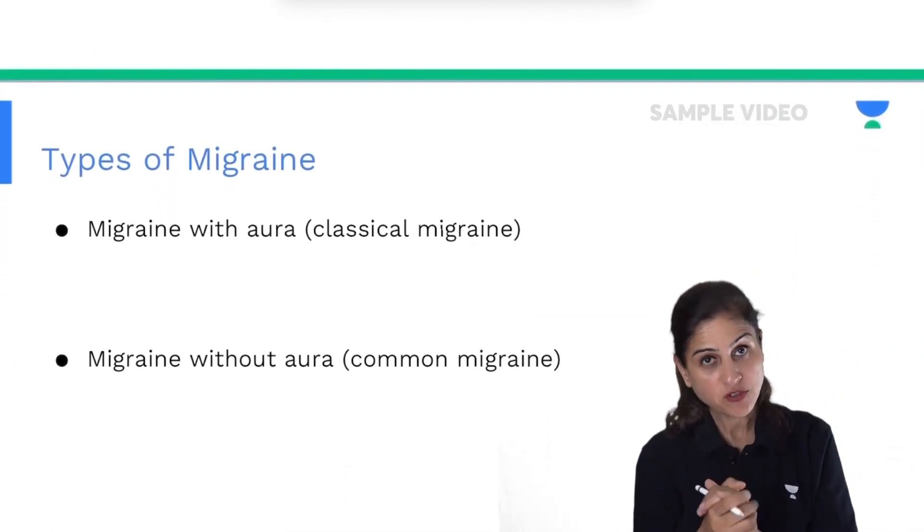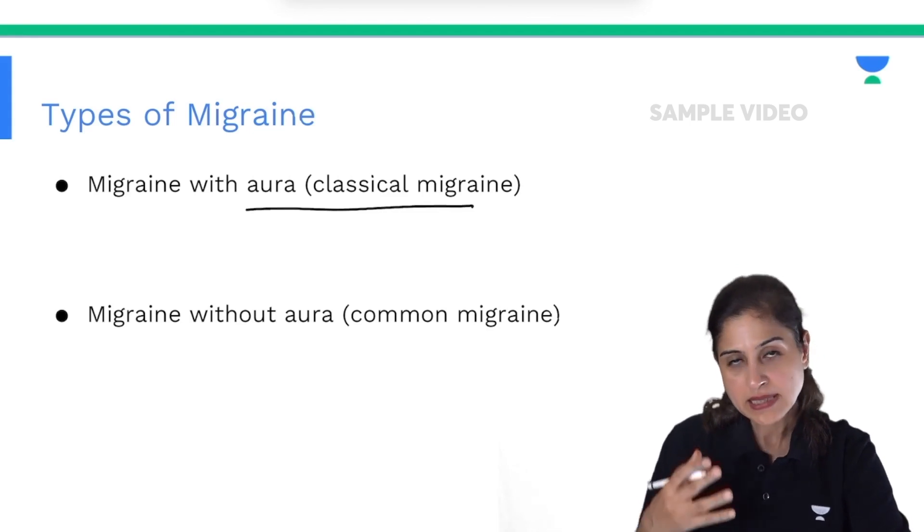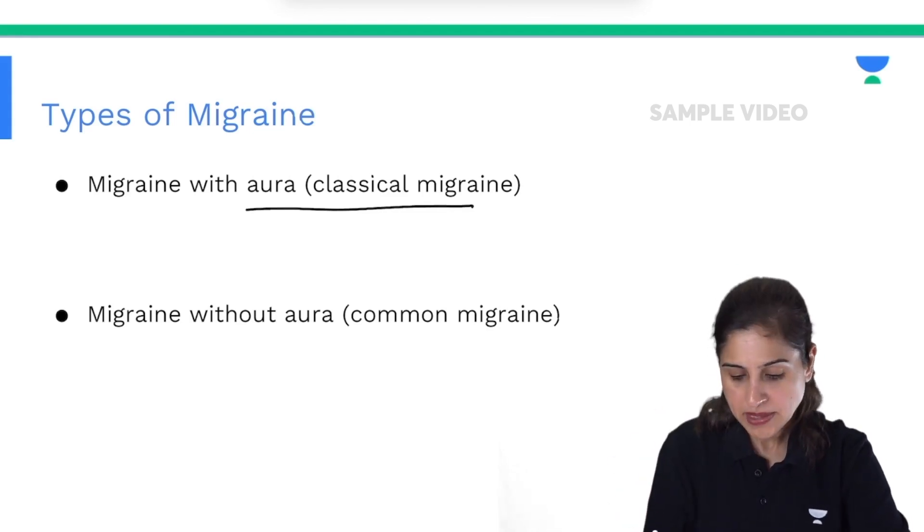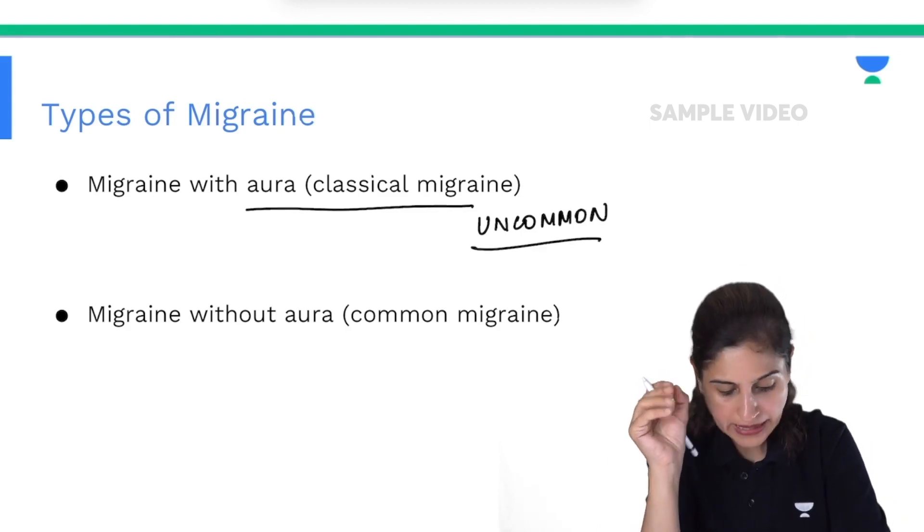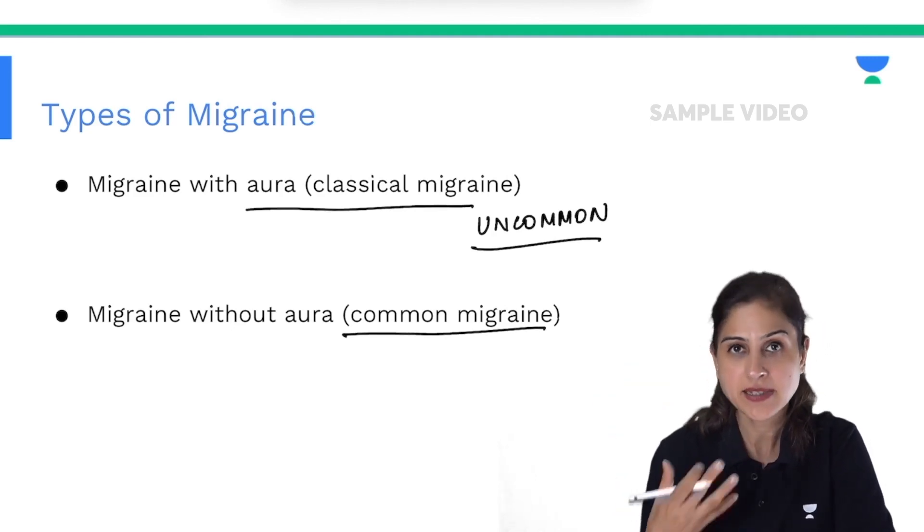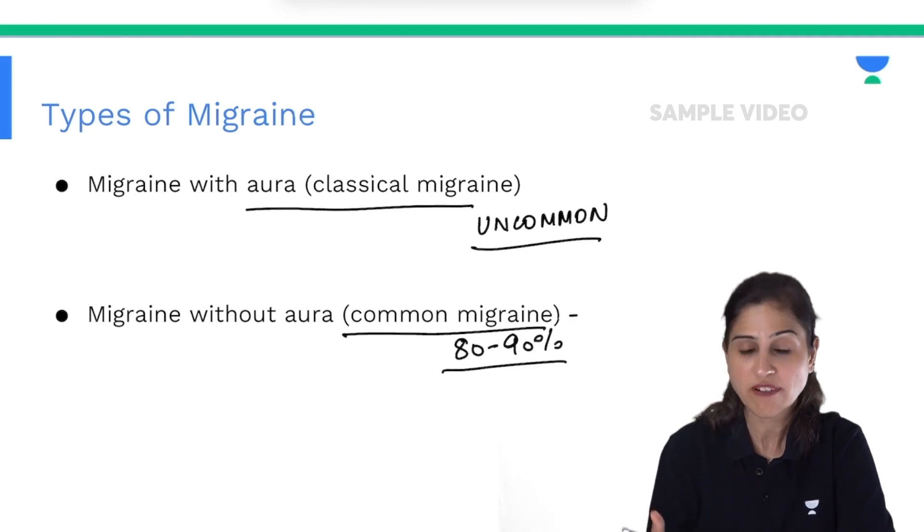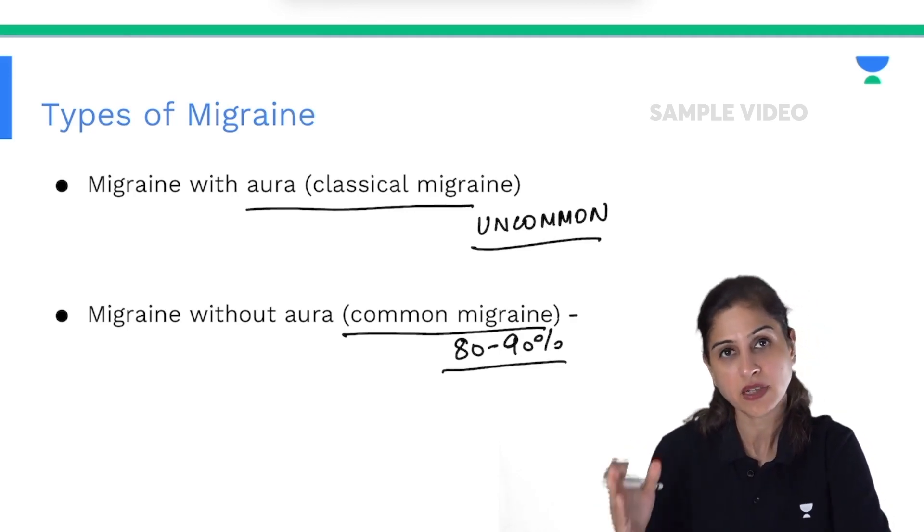Different types of migraine include migraine with aura, also called classical migraine. With aura means there are some prodromal symptoms, but this is a very uncommon type. The next one is migraine without aura, which is the more common type experienced in about 80-90% of patients who have migraine.